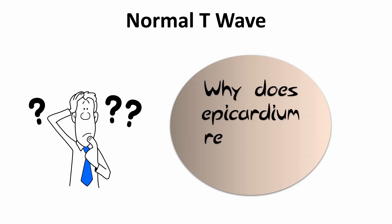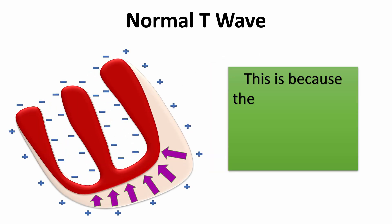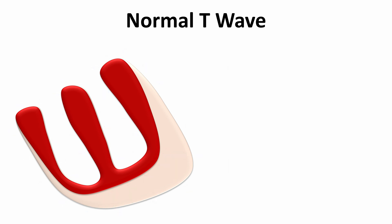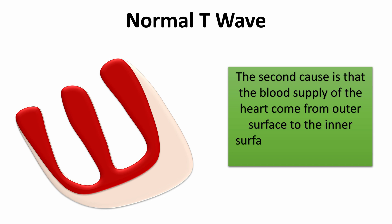Now let's solve the question of the last video: Why does epicardium repolarize first? This is because the outer cells have briefer action potential, so they repolarize first. The second cause is that the blood supply of the heart comes from outer surface to the inner surface during diastole. So, the outer surface repolarizes first.